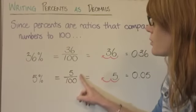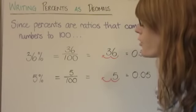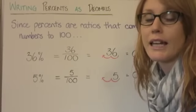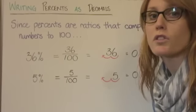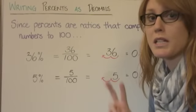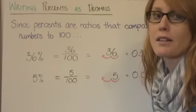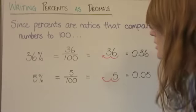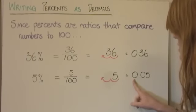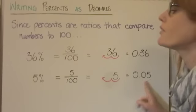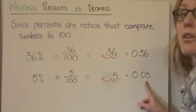5% would be 5 out of 100, or 5 over 100. If we think of it as a division, it's 5 divided by 100. Again, we're using 100, which has two zeros, so we'll move our decimal point two places to the left, which gives us 0.05. So 5% written as a decimal is 0.05.